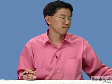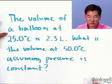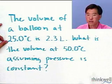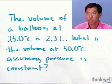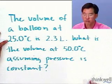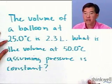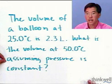Let's look at the kind of problem that you're probably going to be expected to be able to solve using Charles's law. The volume of a balloon at 25 degrees Celsius, which is room temperature, is 2.3 liters. So in other words, we just measured the volume of this balloon at room temperature. What is the volume at 50 degrees Celsius, assuming that the pressure is constant?